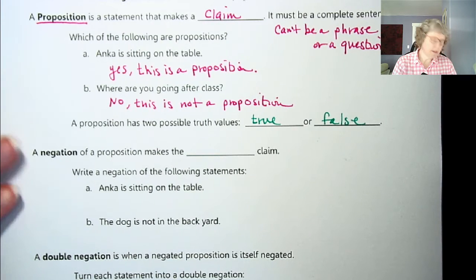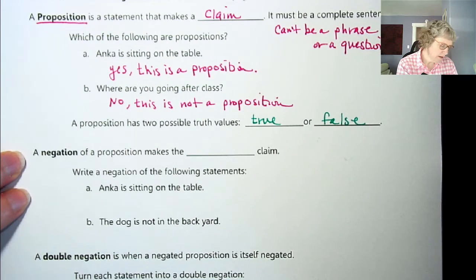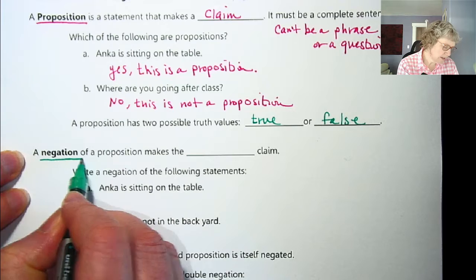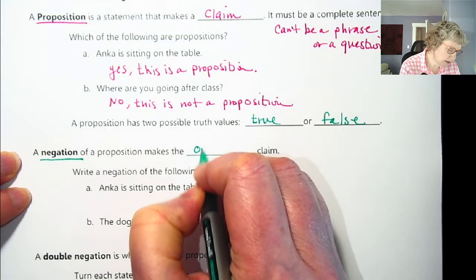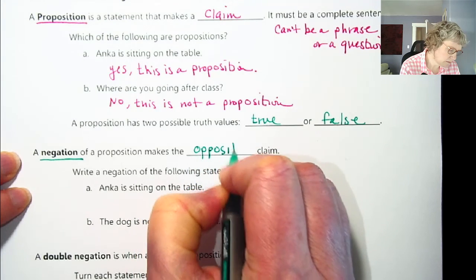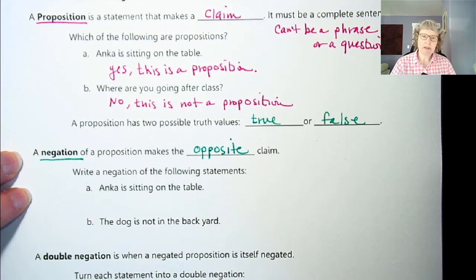So one thing we could do is negation. You're probably very familiar with this. So a negation of a proposition makes the opposite claim. It's switching the meaning to the opposite meaning. That's making the opposite claim.